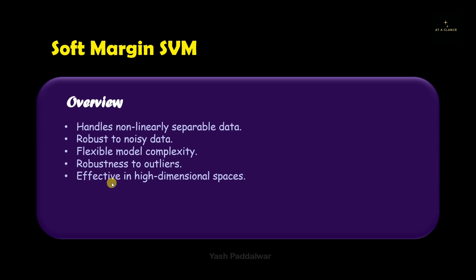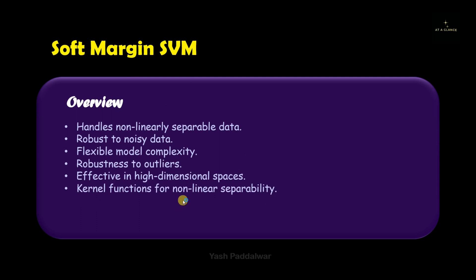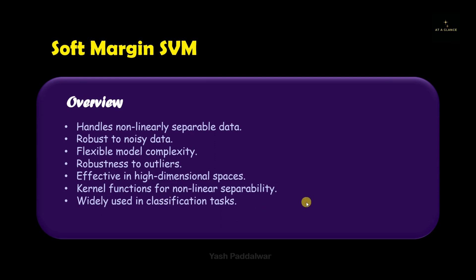One of the most important categories where soft margin SVM is used is when data is present in high dimensional spaces — in that case also soft margin SVM works best. There are a lot of kernel functions that can be used in soft margin SVM for non-linear separability. This type of SVM is widely used for classification tasks.